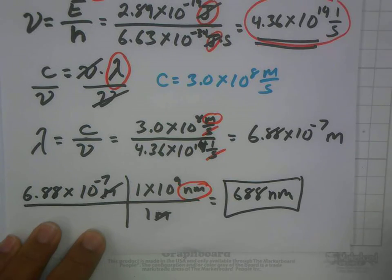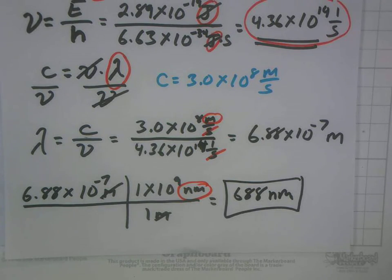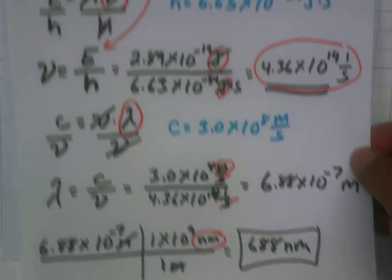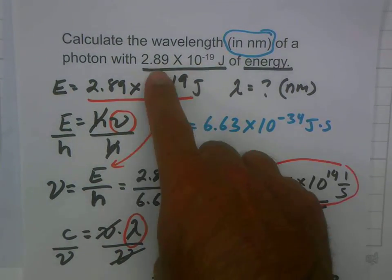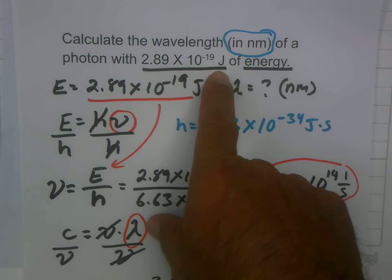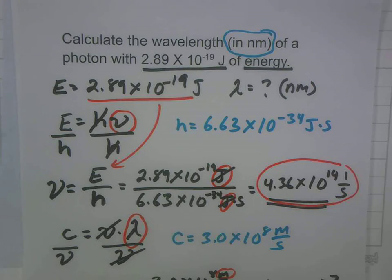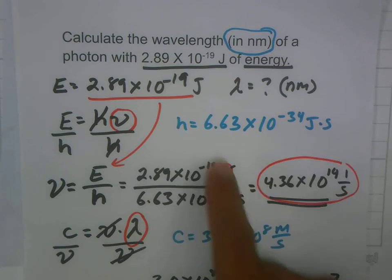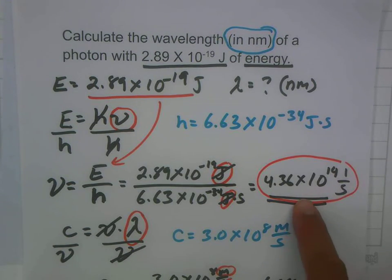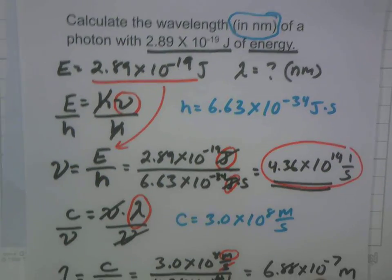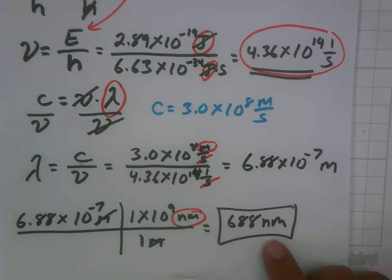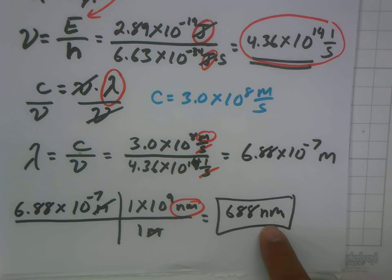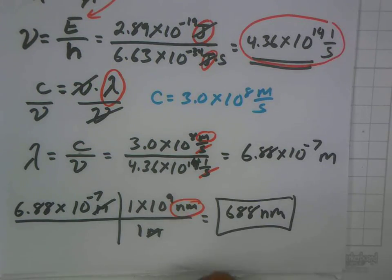So there you go. What does this mean? If you know that a photon has 2.89 times 10 to the negative 19th joules of energy, you can figure out both the wavelength and the frequency. It has a frequency of 4.36 times 10 to the 14th hertz, and a wavelength of 688 nanometers. These numbers are all locked into each other. That's how the last two problems on your worksheet are done.